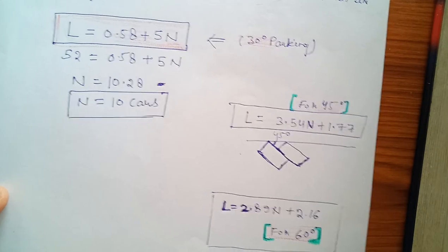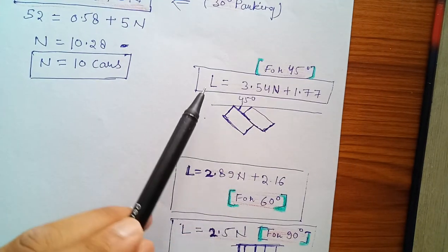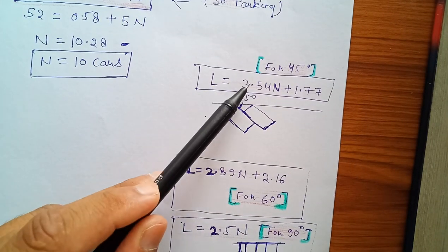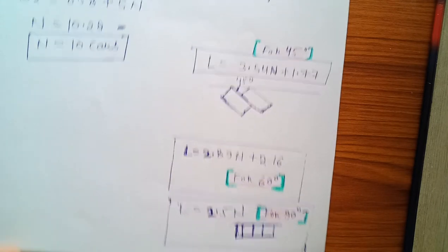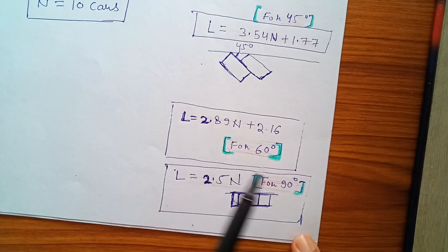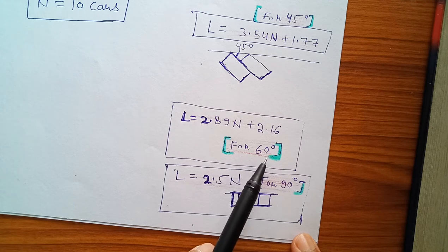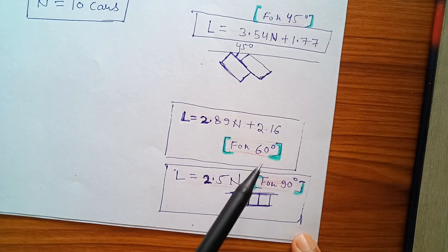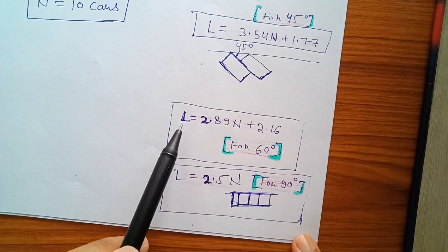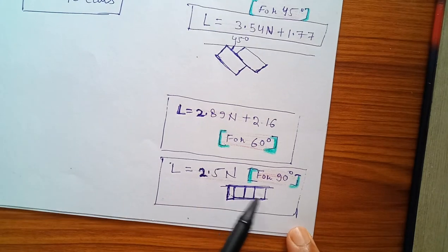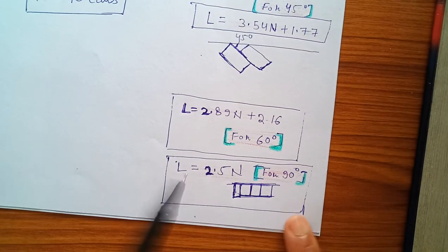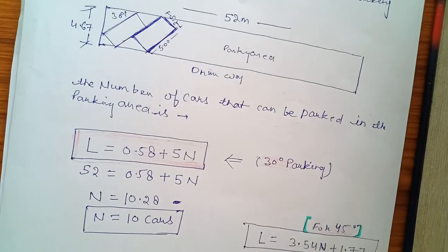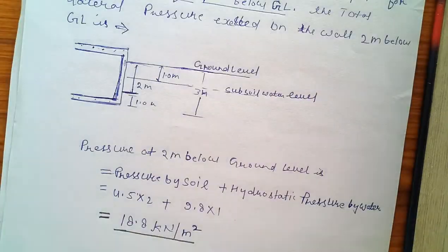If the angle is 45 degrees, we use the formula L equals 3.54N plus 1.77. And if the angle is given 60 degrees and we have to calculate 60-degree type of parking, then use this formula. For 90 degrees, this formula.